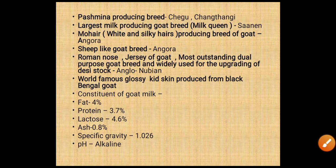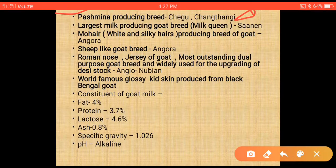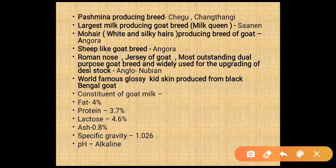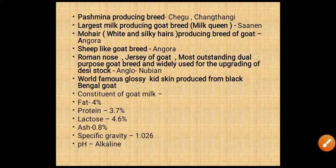Pashmina producing breeds are Chigu and Changtangi — most important point. Largest milk producing goat breed is Sanen, the Milk Queen. Mohair producing breed of goat is Angora. Sheep-like goat is Angora. Roman nose, jersey of goat, most outstanding dual-purpose goat breed widely used for upgrading of desi stock — answer: Anglo-Nubian. Most famous glossy kid skin is produced from the Black Bengal goat.